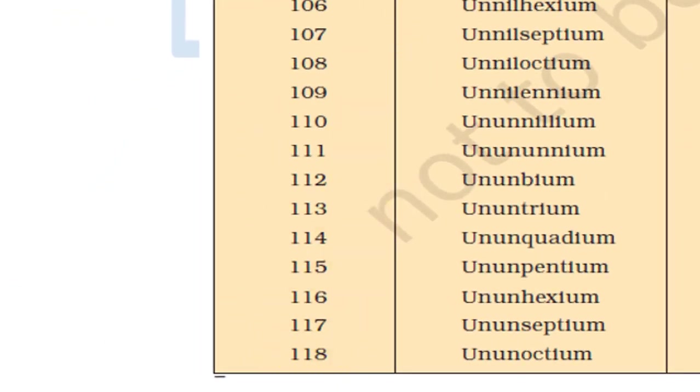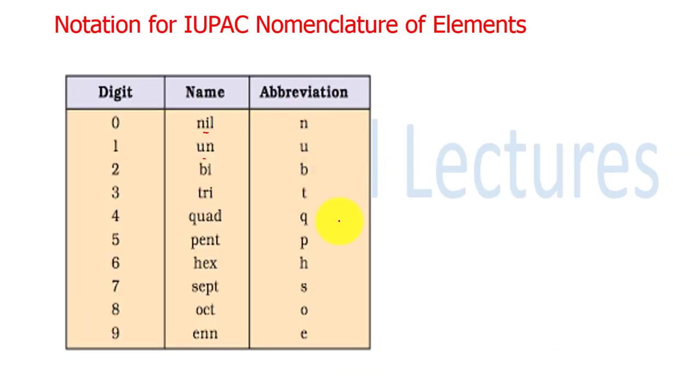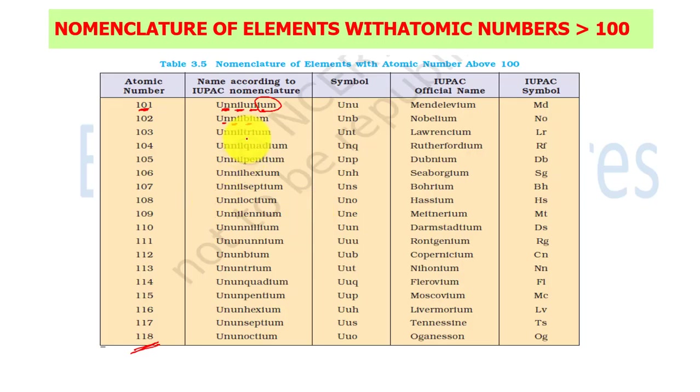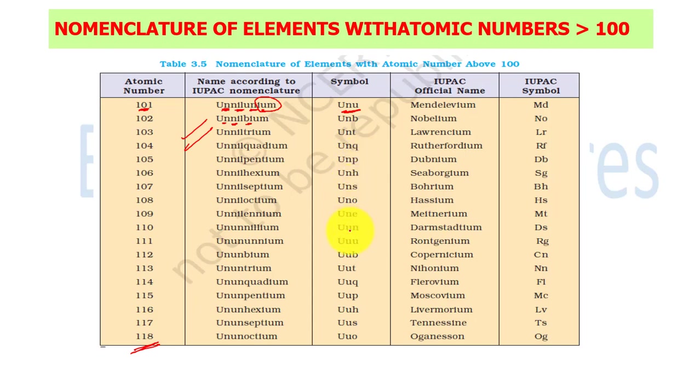First, any new element discovery gets a temporary name. This is the temporary name with a symbol that has three letters, like UUU. Because for zero it is n, then u. Three letter symbol is given.